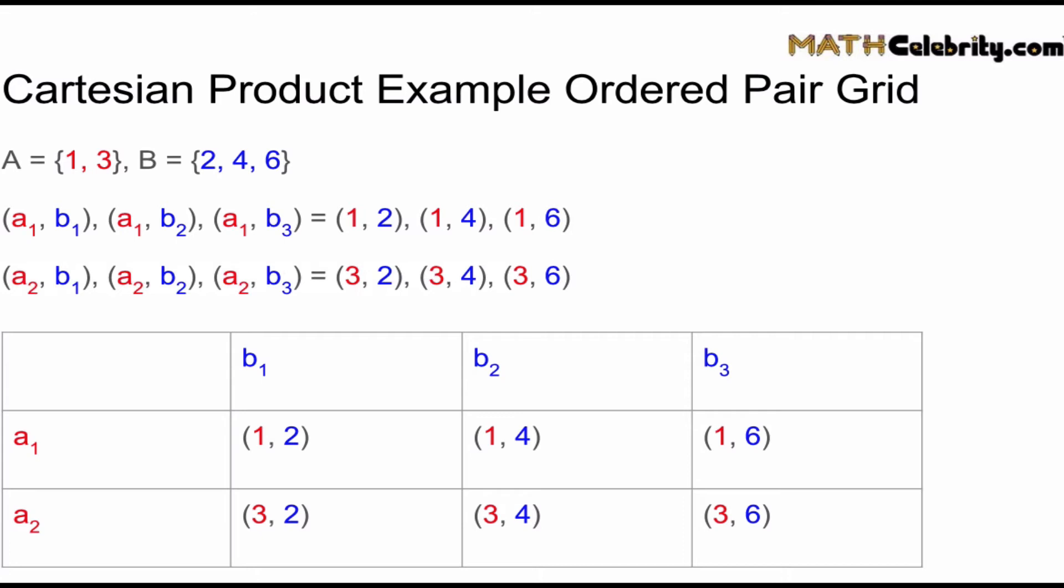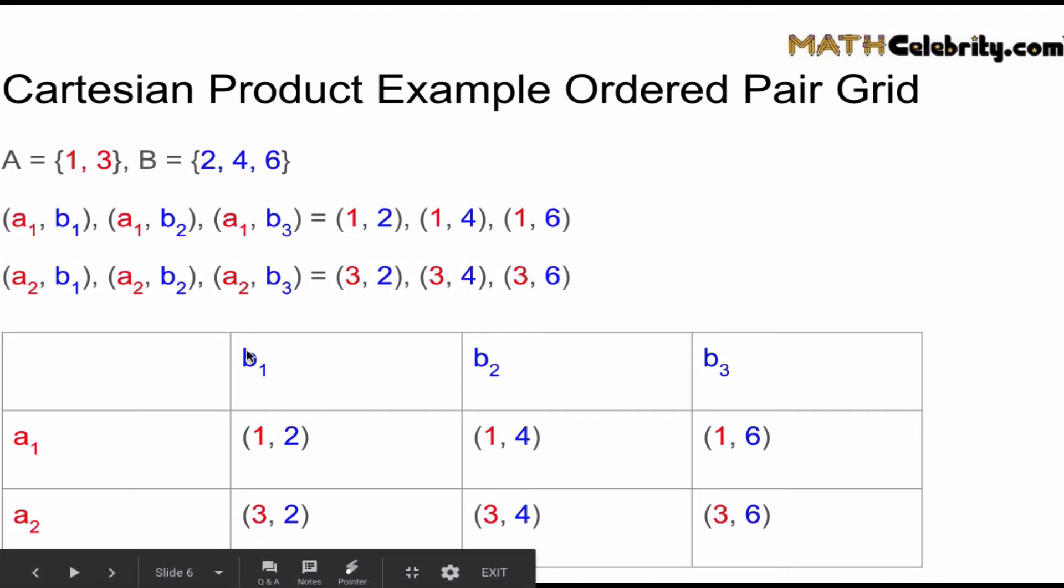As you can see, we have six elements in the Cartesian product, and here's each ordered pair. Once again, we list set A going down vertically, set B going right horizontally, and we just pull in the pieces from each set and make our ordered pair.